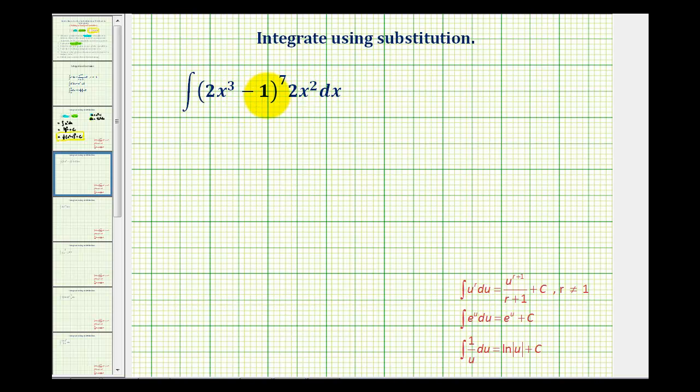So we're going to let u equal the inner part of the composite function here. So u is going to be 2x cubed minus 1. Let's go ahead and color code this. Notice all of this is equal to u, and now we'll determine differential u.